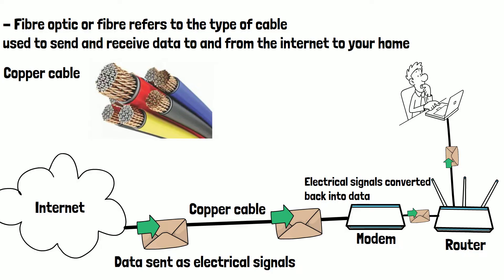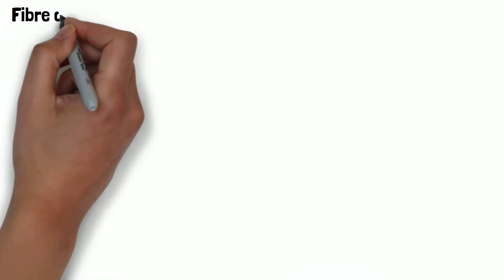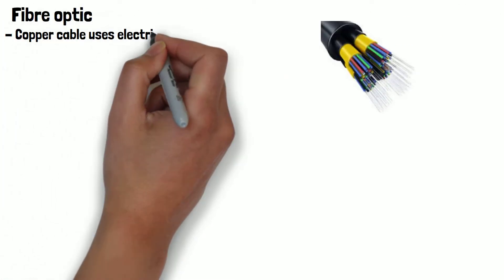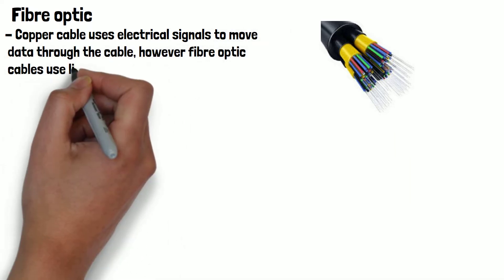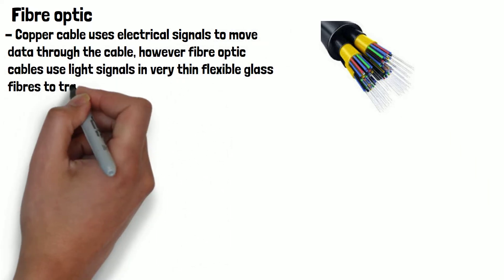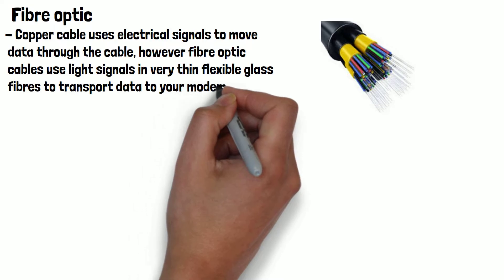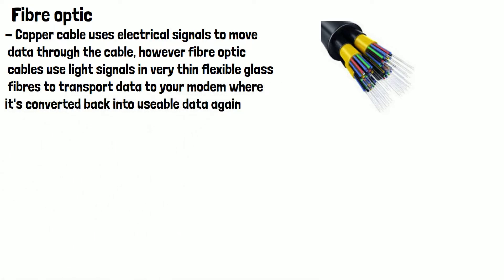The way fiber optic differs from the common copper cable is the way the data is transported through the cable to your modem. As we've mentioned, the copper cable uses electrical signals to move data through the cable. However, fiber optic uses light signals in very thin, flexible glass fibers to transport data to your modem, where it's converted back into usable data again.